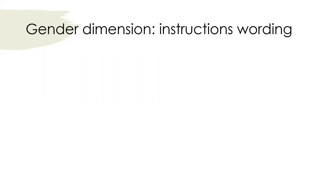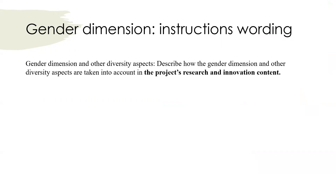Let's recap the exact wording of the gender dimension instructions and dissect them sentence by sentence. The instruction reads: describe how the gender dimension and other diversity aspects are taken into account in the project research and innovation content. When they refer to the project's research and innovation content, I believe they are referring to the entire research process, from its initial development to its ultimate applications and outputs.